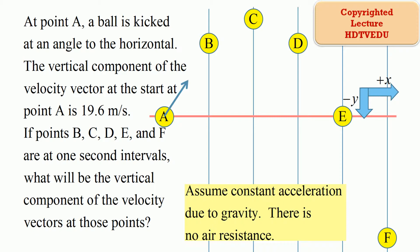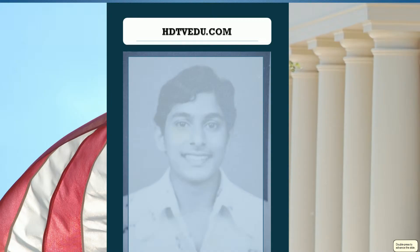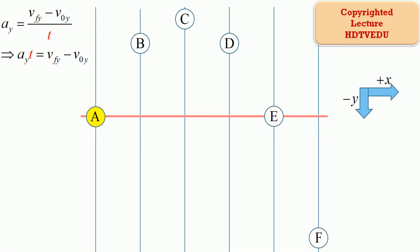Welcome to hdtvedu.com — direct and simple education in seconds. Acceleration due to gravity is always vertically down, even when we project or kick an object at an angle with respect to the horizontal. For all points of the trajectory, acceleration along the vertical equals final velocity along the vertical minus initial velocity along the vertical, divided by time.